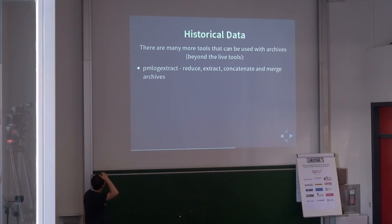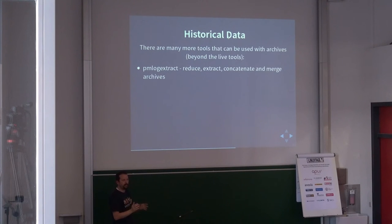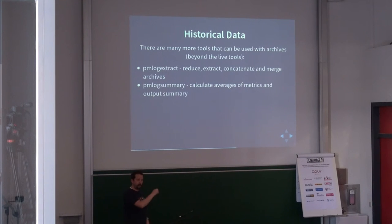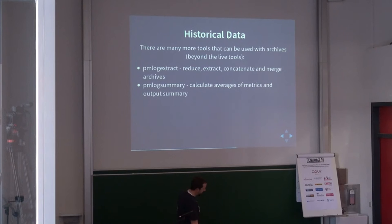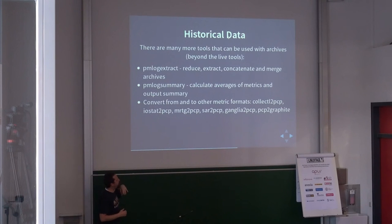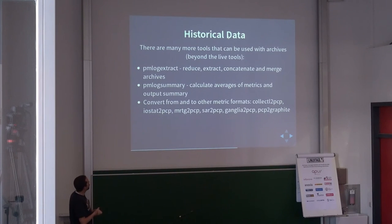PMLogSummary gives you a nice overview of an archive: you give it a few metrics and it tells you the average, max, minimum, standard deviation, and so on. There are also utilities to convert formats — mainly to import to PCP, but we also managed to export to Graphite. We can import from IOSTAT output, MRTG, CollectD, SAR, and Ganglia so far.